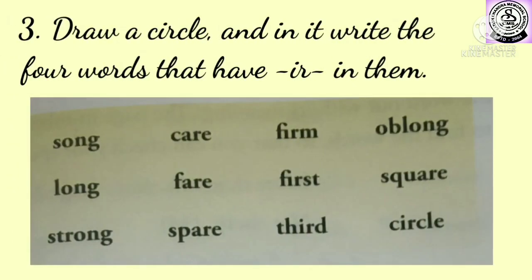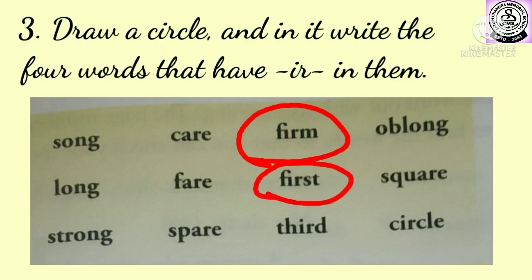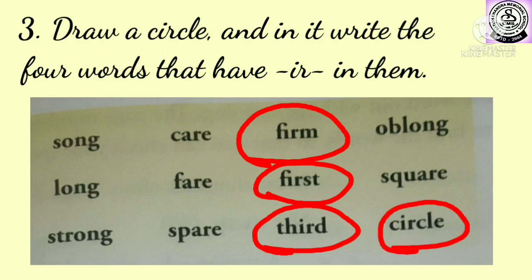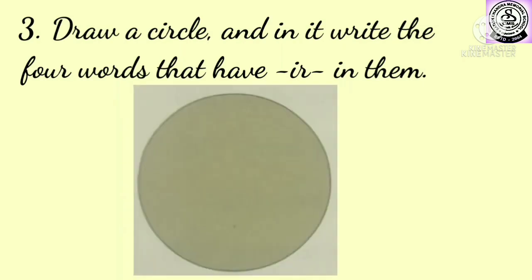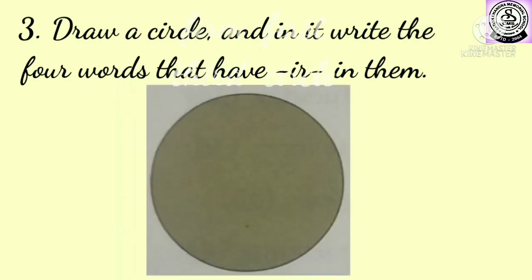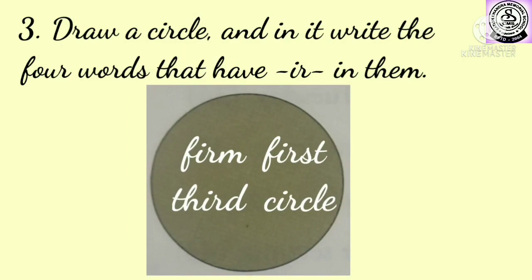Question number three: draw a circle and in it write the four words that have I-R in them. F-I-R-M firm, F-I-R-S-T first, T-H-I-R-D third, C-I-R-C-L-E circle. You will draw a circle and write down all these words in it: firm, first, third, circle.